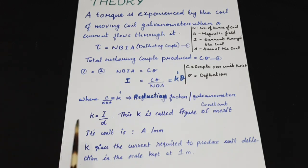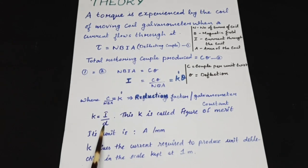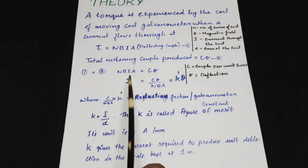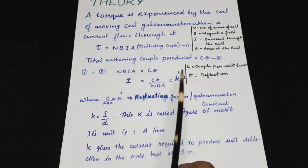If I represent K as the current required for unit deflection on the scale of a galvanometer arrangement kept at 1 meter away from the mirror, then I can call K as the figure of merit of the instrument. The experiment is based on the principle that the current flowing through the galvanometer is proportional to the deflection theta and it is related by a constant called K dash.